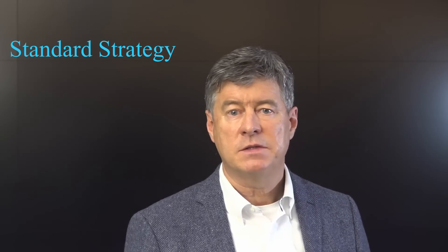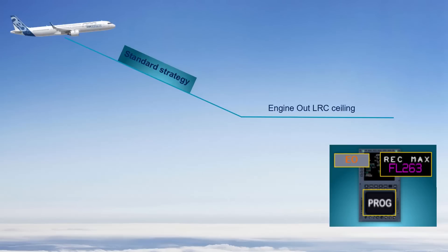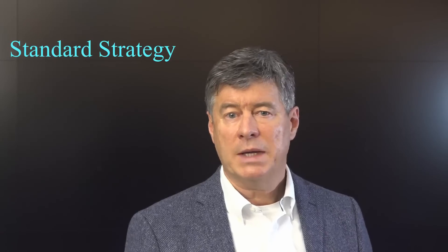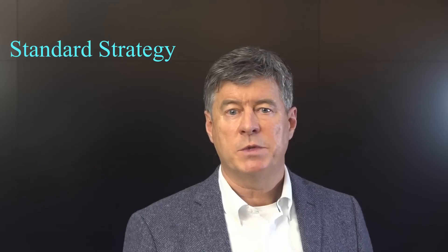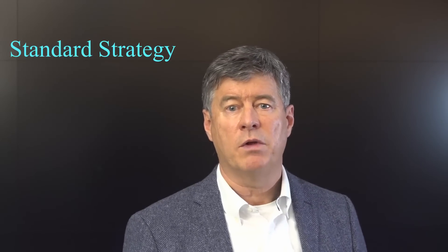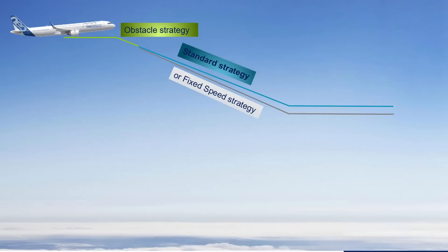If you are not flying ETOPS or over a mountainous area, you apply the standard strategy. To apply this strategy, you need to select a speed or Mach target that ensures the aircraft is within the stabilized windmill engine relay in-flight envelope. This speed or Mach target is different depending on the aircraft type you are flying. In some specific airspaces, such as the North Atlantic tracks, it can be appropriate to use the obstacle strategy first in order to minimize the loss of altitude while leaving the track. When the descent path is cleared, you can go back to the standard or fixed speed strategy.